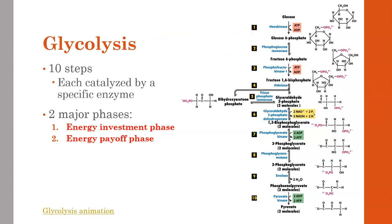Glycolysis involves the breakdown of one molecule of glucose into two molecules of pyruvate. Through glycolysis, we get a payout of two ATP. We're going to look more closely at the process of glycolysis to understand how those products result from the reactants. Glycolysis, although we've simplified it to basically one step, actually occurs in about 10 steps, and each step is catalyzed by a specific enzyme.